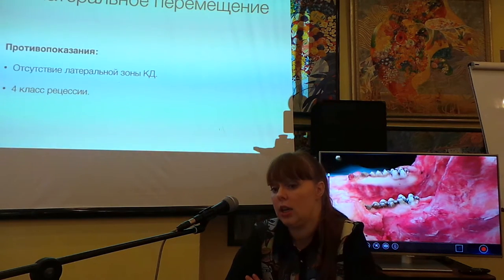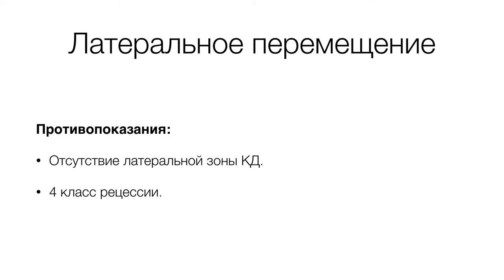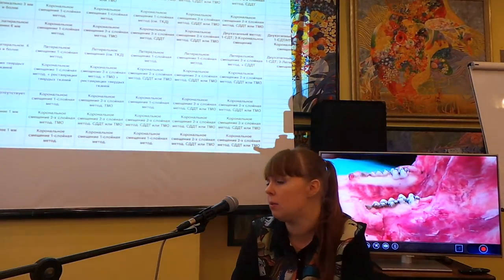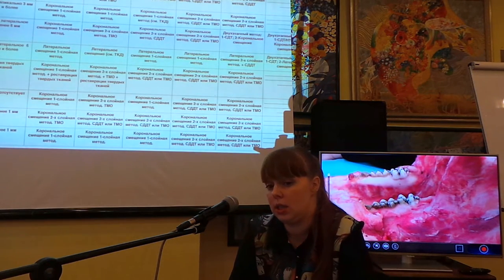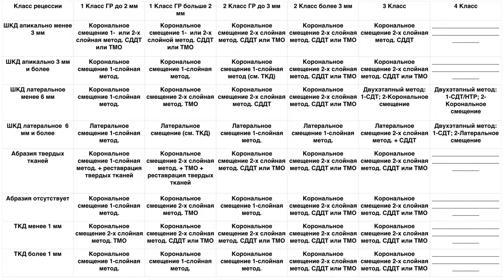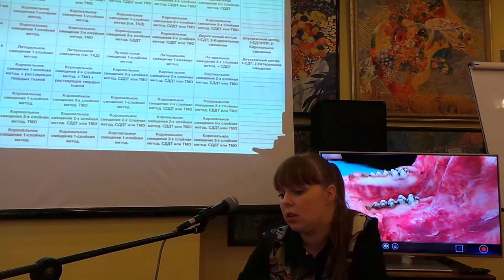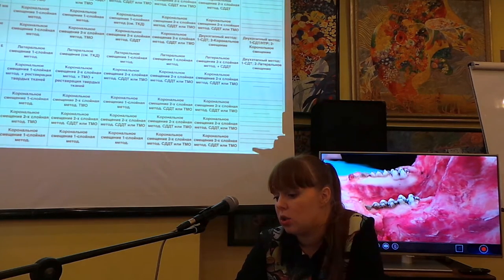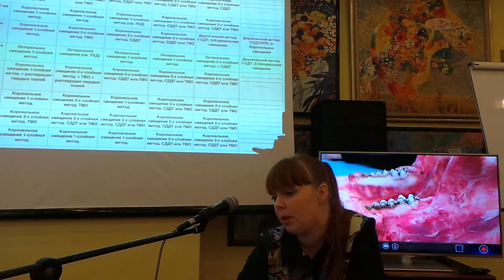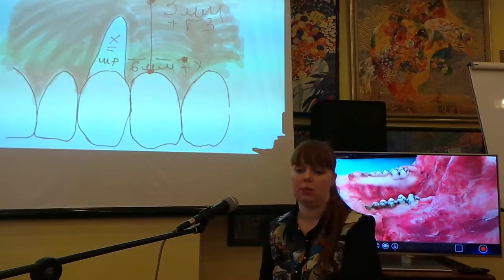Противопоказания для латерального перемещения — это широкая рецессия, отсутствие латеральной зоны кератинизированной десны и четвёртый класс. Мы возвращаемся к нашей таблице — это алгоритм выбора методики для устранения рецессии десны. Вы видите, что есть 2–3 классы, при которых используется латеральное перемещение — либо в однослойном, либо в двухслойном методе. Иногда используется двухэтапный метод, при устранении рецессии четвёртого класса это тоже возможно. Сама методика подразумевает использование собственных тканей, латеральных, аппроксимальных от рецессии, если их объём составляет 6 и более миллиметров.